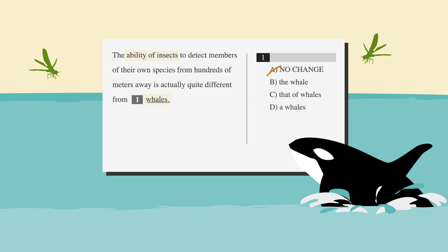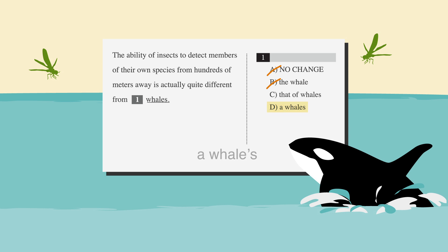Let's see if there are any answer choices that maintain the proper parallel structure. Answer choice B is comparing the ability of insects to the whale — that doesn't work either. In answer choice C, "that of whales" can be understood to mean "that ability of whales" — that's looking pretty good. But before we pick it, let's check out D. Answer choice D sort of sounds good, but there's a problem — it's missing an apostrophe. If it said "a whale's," we would be talking about the abilities of a whale. Without the apostrophe, we're talking about a wrong answer. So the correct answer is C.